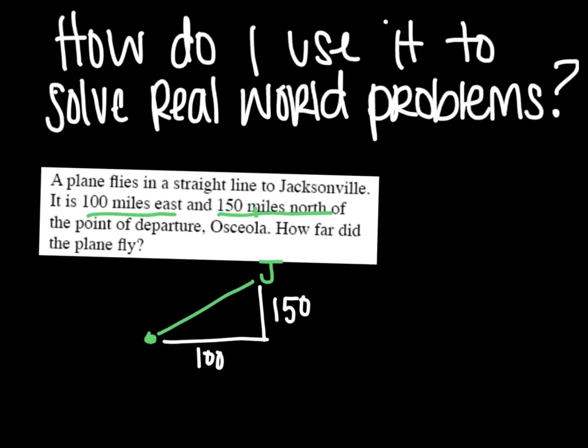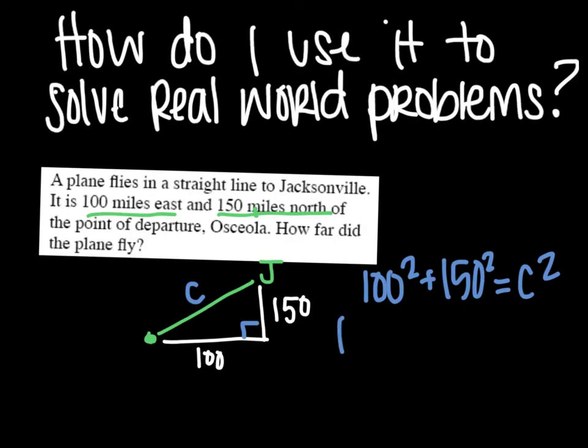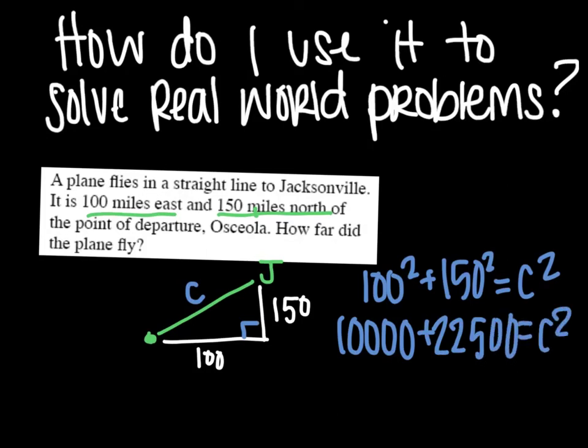Now I can use the Pythagorean theorem. So this would be my right angle. That makes this C. So 100 squared plus 150 squared equals C squared. So I have 10,000 plus 22,500 equals C squared. Add those together.